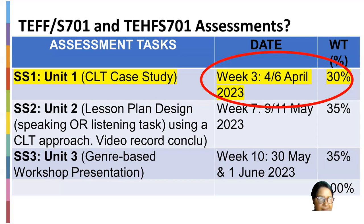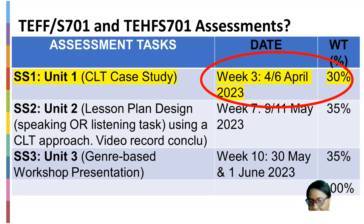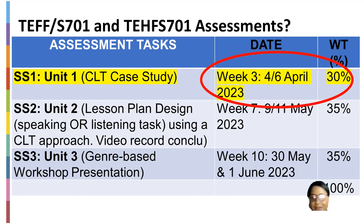Just to recap: for TEFS 701, your SS1 counts 30%, SS2 counts 35%, and SS3 counts 35% — giving you 100%. I apologize, I forgot to change the dates on this slide, but the correct slide is actually in your welcome and introduction video. I will remind you in next week's video about the submission dates.